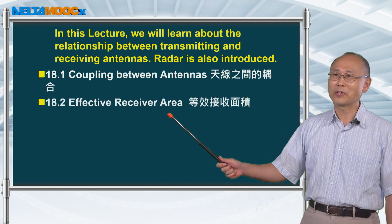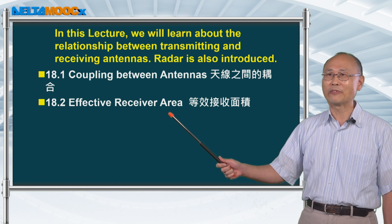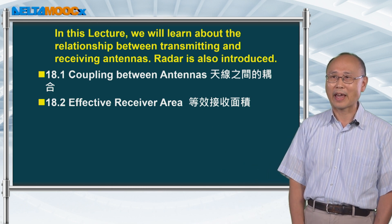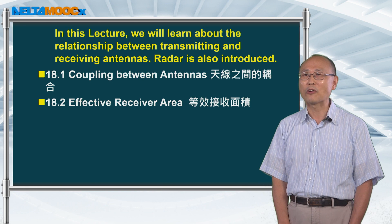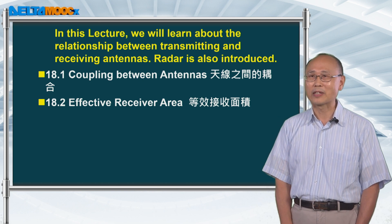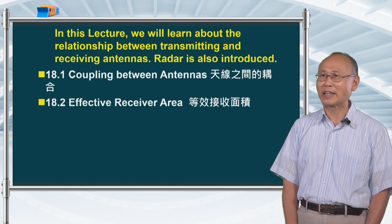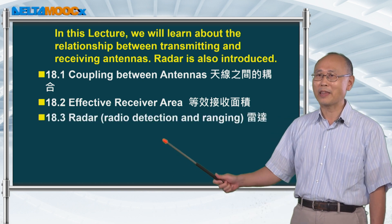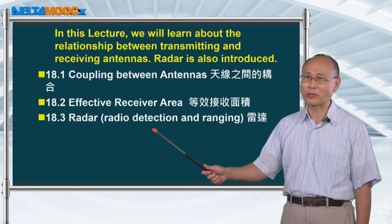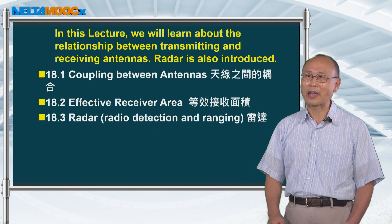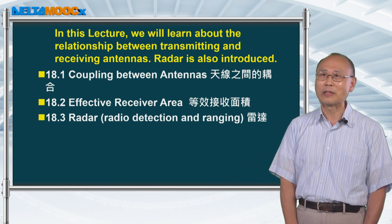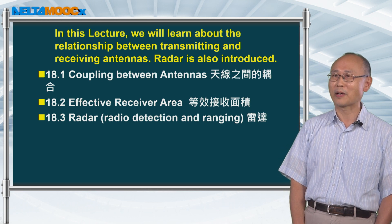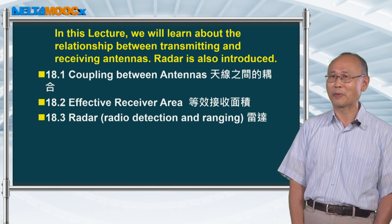And then we're going to define effective receiver area, which is an area to tell you how effective a receiving antenna can receive a signal. And then we'll also be talking about radar, which is an important equipment to detect some objects in space.